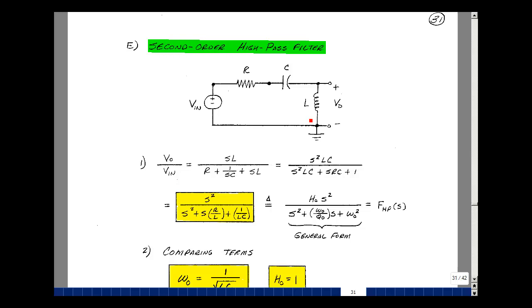Vout is a voltage divider with Vin, so it's going to be SL divided by R plus 1 over SC plus SL times Vin, and we'll bring the Vin over here. Let's multiply the numerator and denominator by SC. I'll get S squared LC, SRC, 1, and then S squared LC.